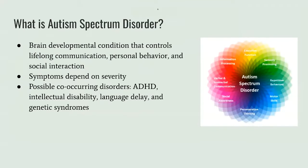What exactly is ASD? It is a brain development condition that controls lifelong communication, personal behavior, and social interaction. Symptoms depend on severity. Possible co-occurring disorders include ADHD, intellectual disability, language delay, and genetic syndromes.